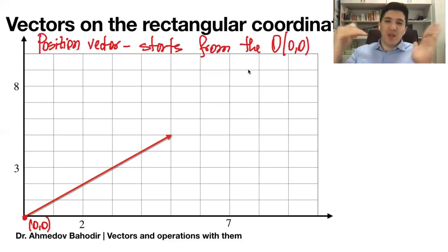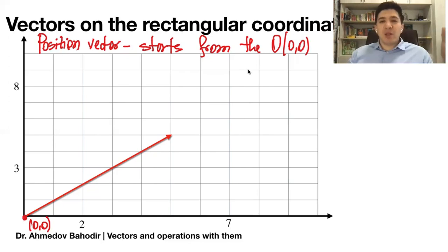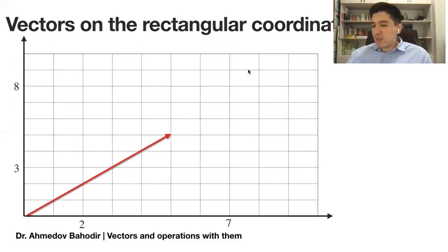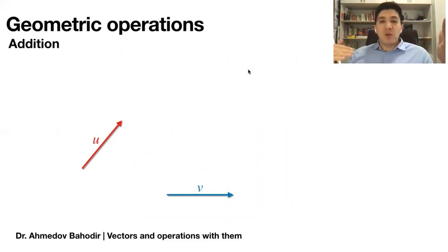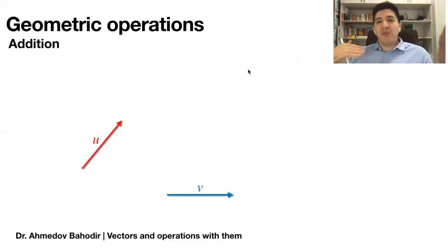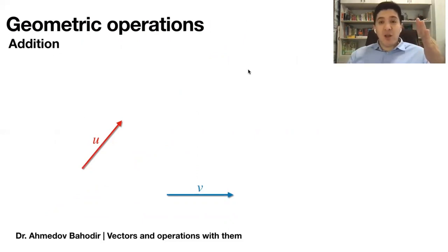By just placing the vector at the origin. Now I would like to eliminate the background of the rectangular coordinate system and talk about how to do operations with vectors geometrically. Let's say you're given two vectors u and v and you would like to add these two vectors. If you add one vector to another with the same dimensionality, you're going to get a third vector.